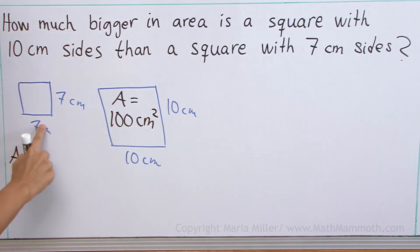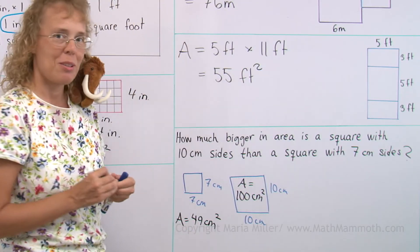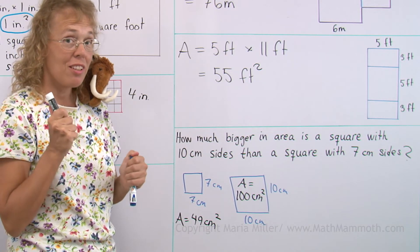Seven times seven. I'm sorry, here should have been centimeters. This area is 7 times 7, 49. And again, square centimeters. And so now we can solve the actual question.